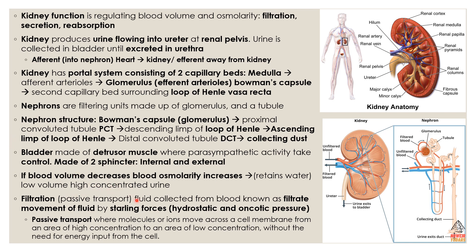If blood volume decreases, blood osmolarity increases — meaning there is less solution but more solute — and the body retains water. This results in low volume, highly concentrated urine. That's why your urine is sometimes highly concentrated: it's due to low blood volume.